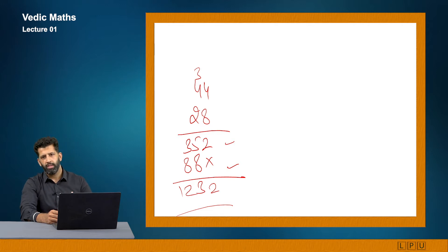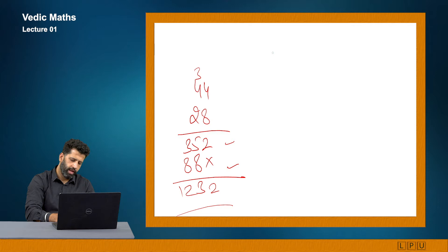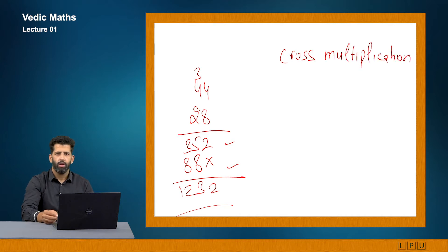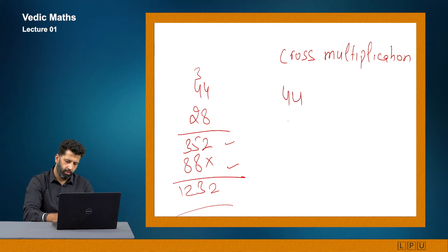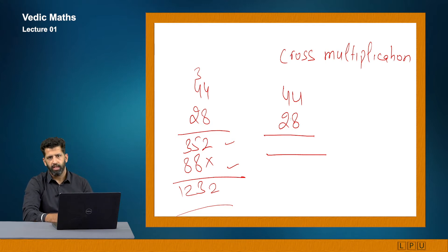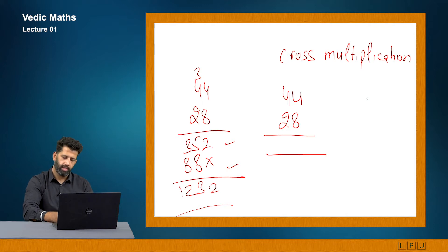There is a method I want you to understand — the one-line method, also famously called cross multiplication. In cross multiplication, I want to multiply 44 with 28 in one line only. There are 3 steps because there are 4 digits total — 2 digits above and 2 digits below. I will complete this multiplication in 3 steps.